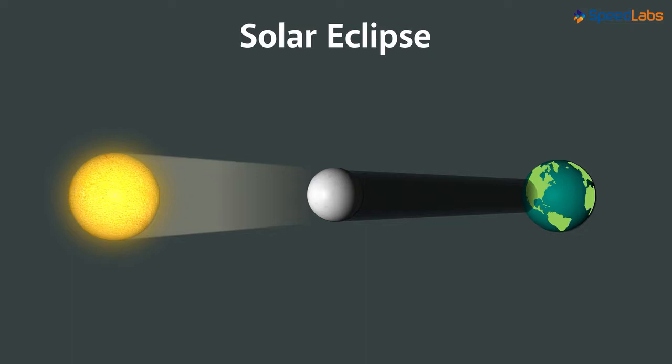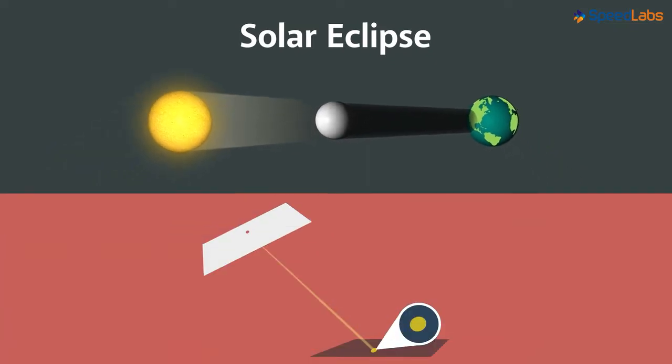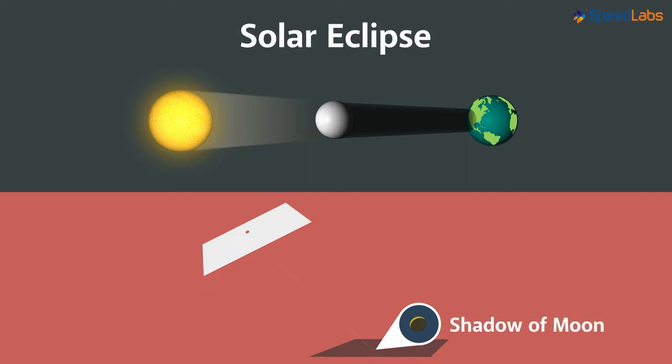But here is one interesting thing. We can see this eclipse using our pinhole camera. As the moon comes between the earth and the sun, it blocks the light entering the pinhole and hence its shadow gradually replaces the image of the sun. Note carefully that this is a shadow of the moon and not the image of the moon.